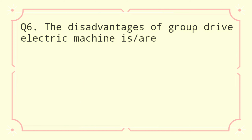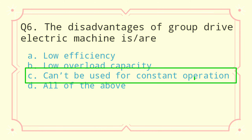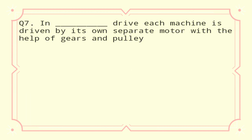Question 6: The disadvantages of group drive electric machines are: a) low efficiency, b) low overload capacity, c) can't be used for constant operation, d) all of the above. The correct answer is can't be used for constant operation.